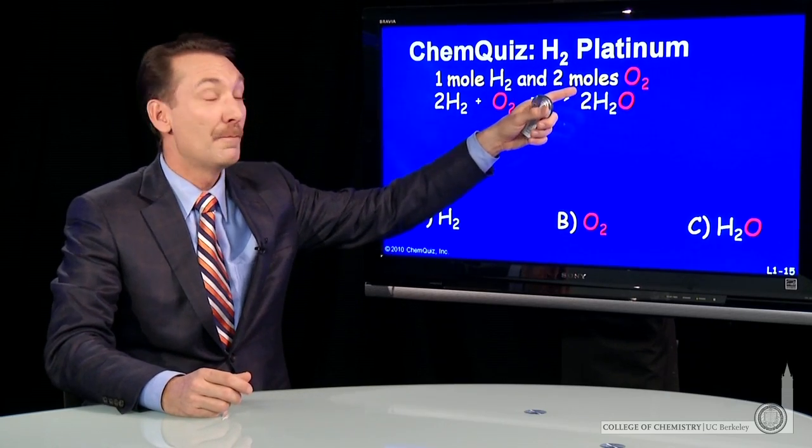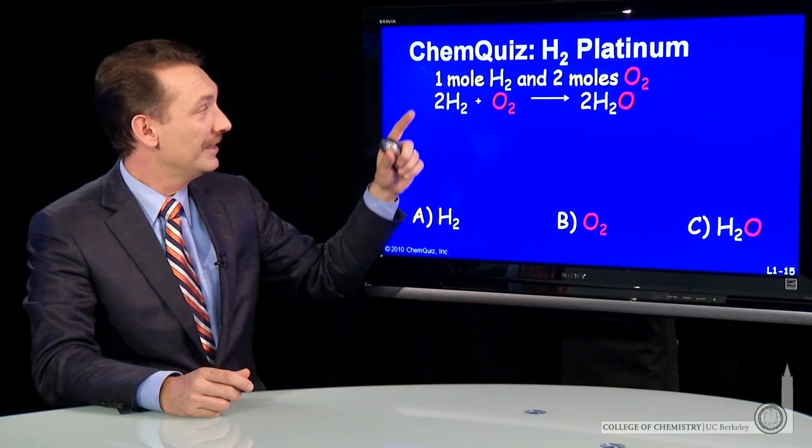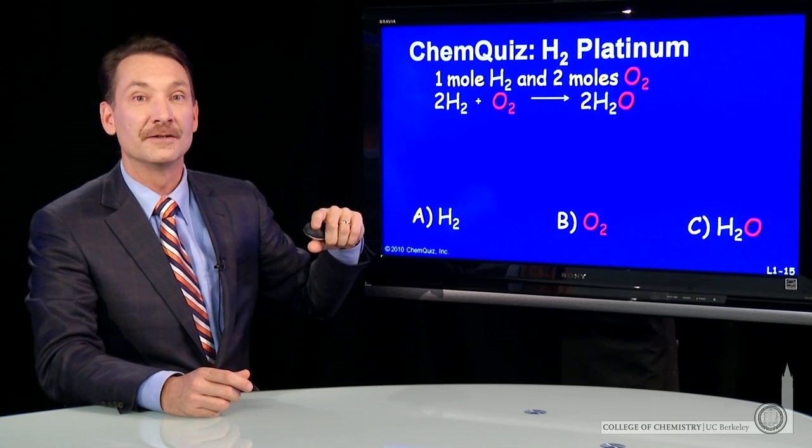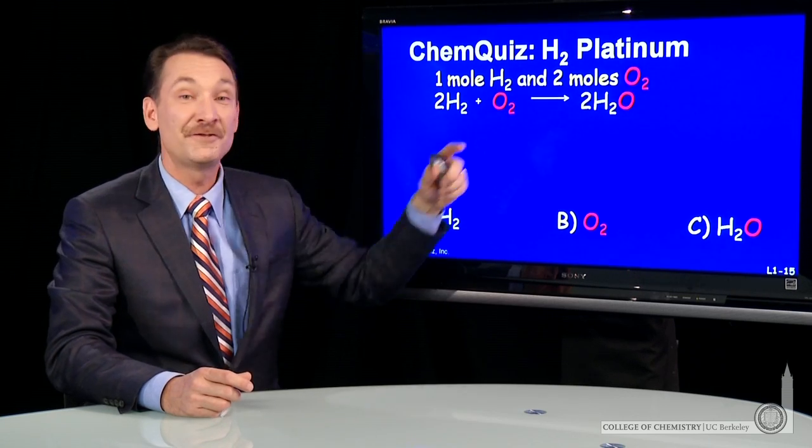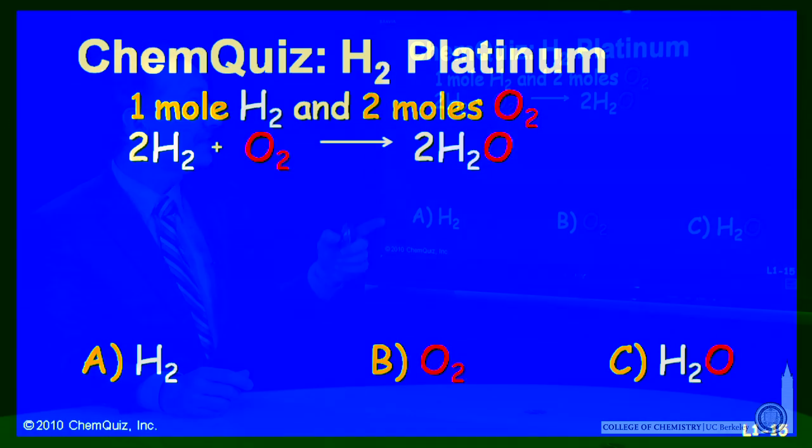And in this case, I think you can see we have much more oxygen than we need to react with one mole of hydrogen. To react with one mole of hydrogen, we'd only need half a mole of oxygen, and we have two.